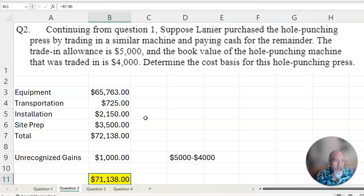Subtract the trading allowance minus the book value, and you've got an unrecognized gain of $1,000. Subtract that $1,000 from the previous number from the previous assignment, and that is your cost basis for the depreciation. How do you know all this? Well, these are just rules that you follow for taxes.